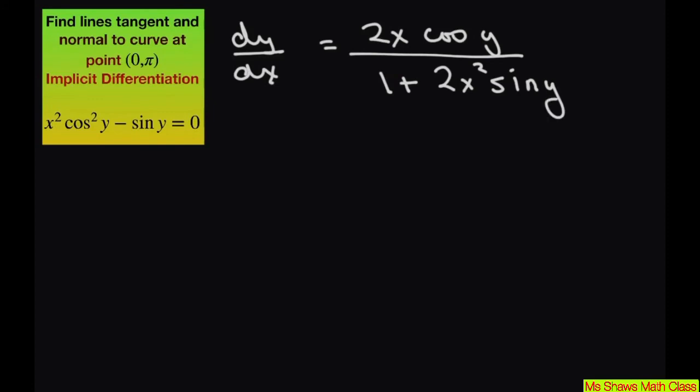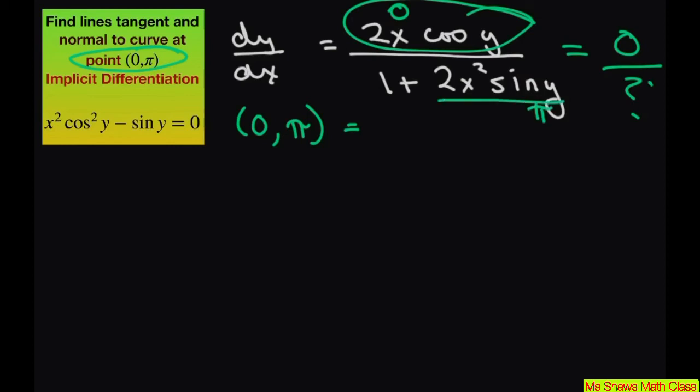So again, what we have is dy/dx equals 2x cos(y) divided by 1 + 2x² sin(y). Now I can substitute in my values here and find everything out. So at the slope at (0, π), you're plugging in your x is 0. So what's going to happen is when you plug in 0, you're going to get 0 over something. And we don't really care what the something is. But sine of π is 0. So this is 0. It's really going to be 0 divided by 1. So that's just going to be 0 equals your slope.